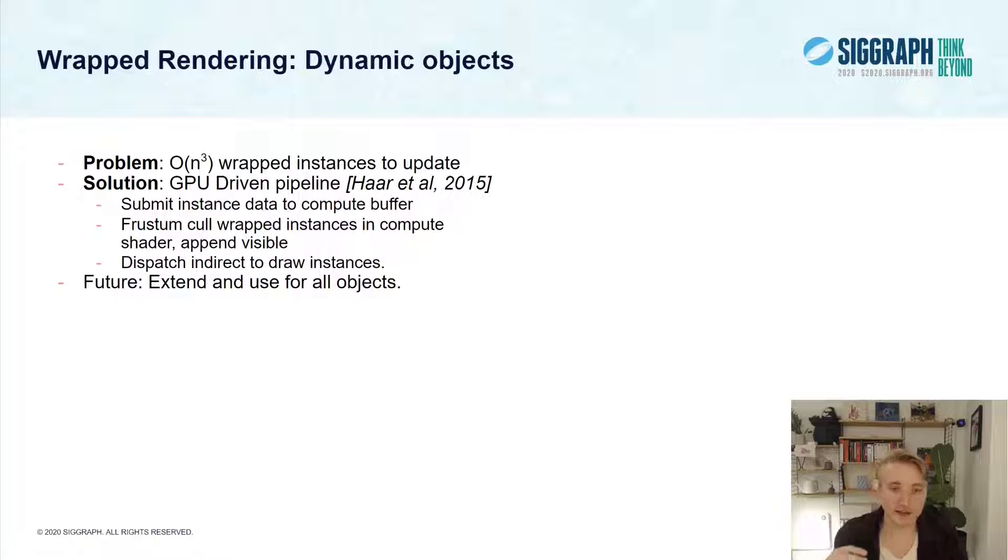One thing you don't get around for this technique is that there are N cubed, where N is the side length of this grid, unique instances in the world. Whenever you make a change, you have to propagate that out to all of these N cubed instances, and this does become rather infeasible quickly. So instead, what we do for dynamic objects is that we create a tiny GPU-driven pipeline, where for the central instance, we submit its data to some compute buffer. Then in a compute shader, we can pretend it's in every world-derived cell, do the frustum culling there and append all the visible instances of this object to this buffer and use an indirect dispatch to then draw all the world-derived objects in a single pass without ever having to really instantiate this object. You might say we could have used this for every object, which is true, but there is more work to be done before this GPU pipeline also supports transparencies and sorting and meshlets and all these other things.